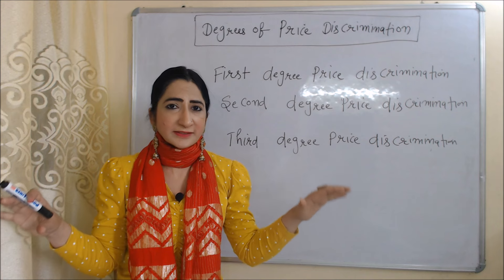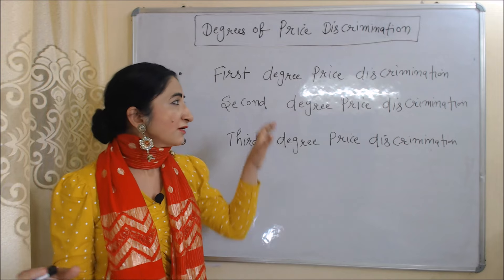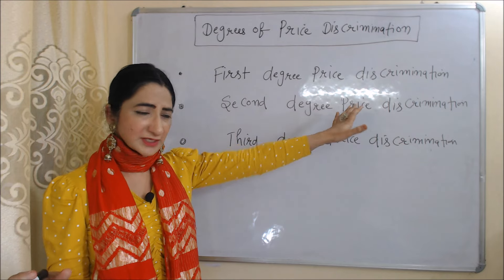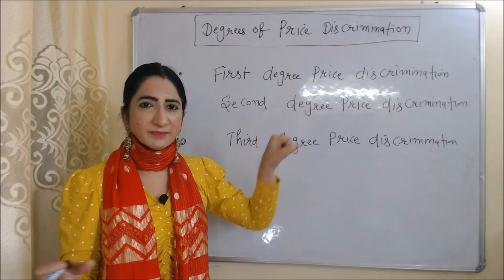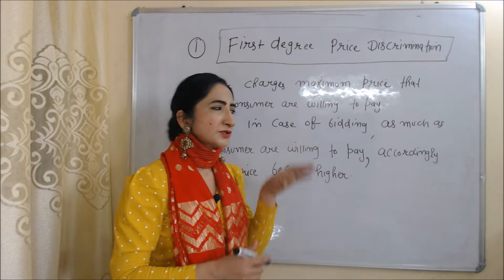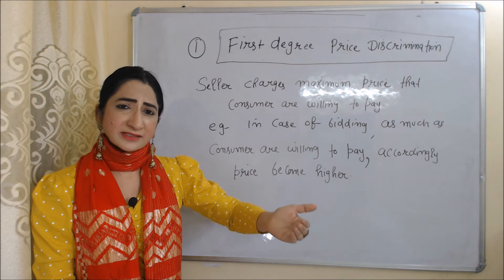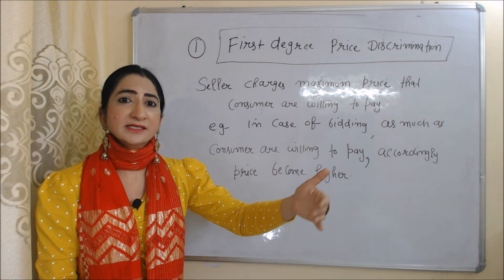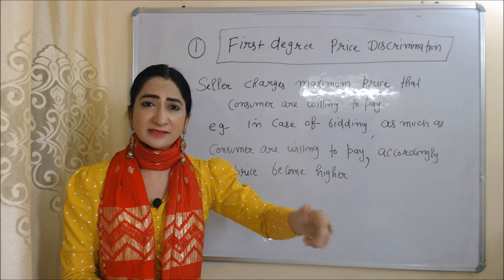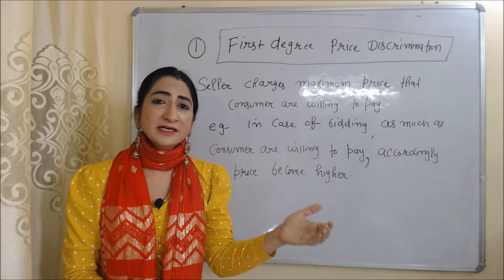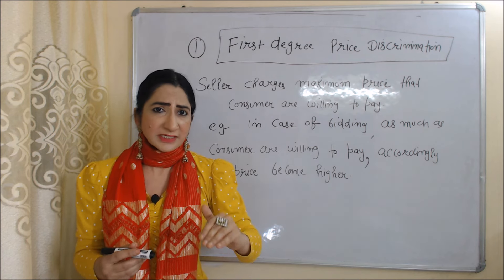Price discrimination basically has three types of degrees: first-degree price discrimination, second-degree price discrimination, and third-degree price discrimination. In case of first-degree price discrimination, the seller charges the maximum price that consumers are willing to pay.